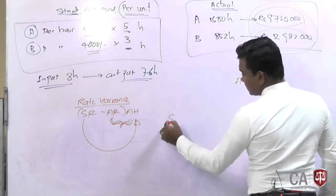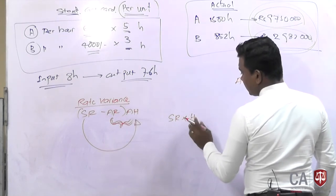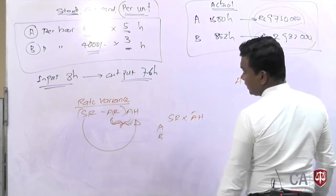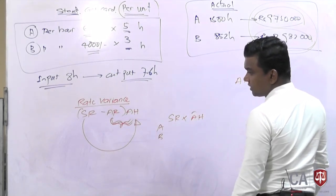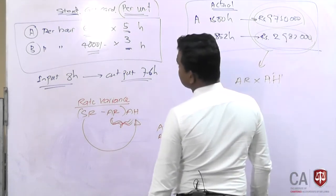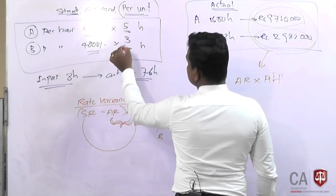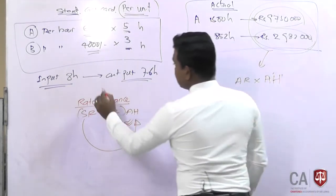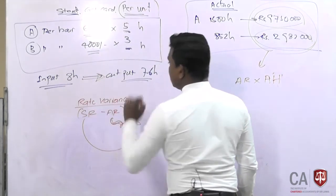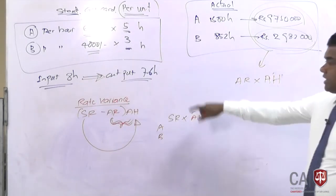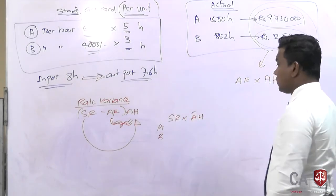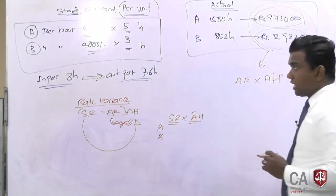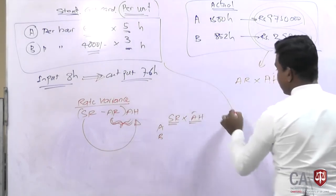Let us take standard rate into actual hours for A and B. The standard rates are 6,000 and 4,000 rupees per hour. However, because of the 5% normal loss, when you introduce 5 hours you end with 4.75 hours, and when you introduce 3 hours you end with 2.85 hours. Therefore, to calculate standard rate into actual hours, you need to account for the normal loss in determining the effective standard hours per unit.